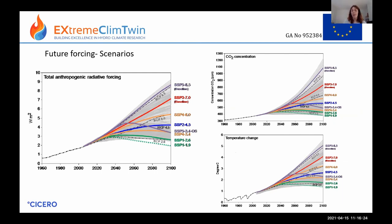For future projections, we don't know exactly what will happen with greenhouse gas emissions, so we develop scenarios representing different possible futures depending on mitigation efforts. CMIP6, the latest Coupled Model Intercomparison Project, uses Shared Socioeconomic Pathways (SSPs). SSP5-8.5 has the most warming while SSP1 has the lowest. The radiative forcing depends partly on CO2 but also on aerosols and other greenhouse gases.